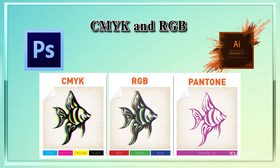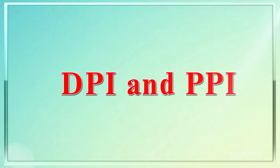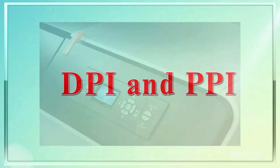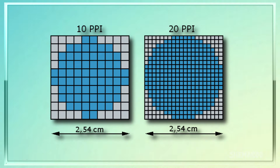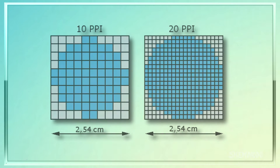DPI is only of concern when you are creating work for printed output. It stands for dots per inch and refers to the number of dots per inch on a printed page. Generally, the more dots per inch, the better quality the image. 300 DPI is the standard for printing images.